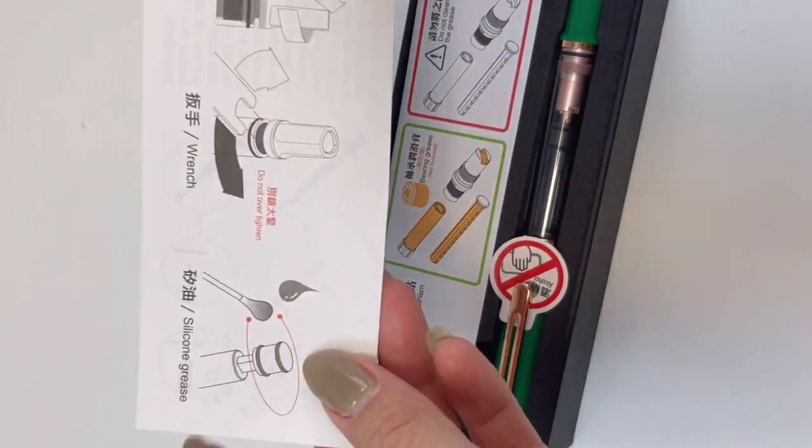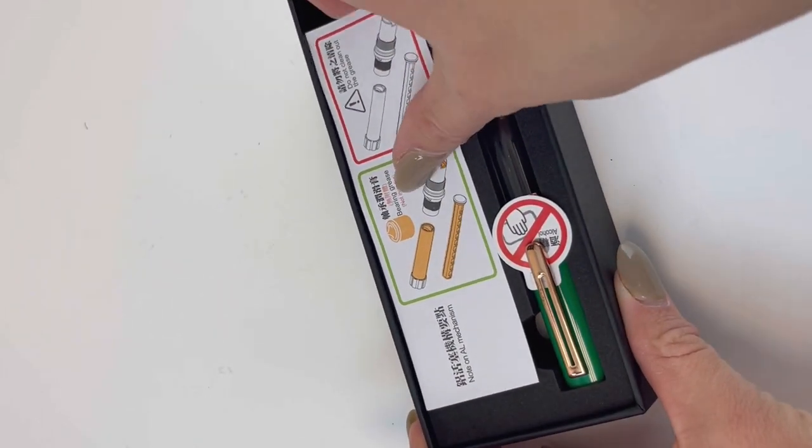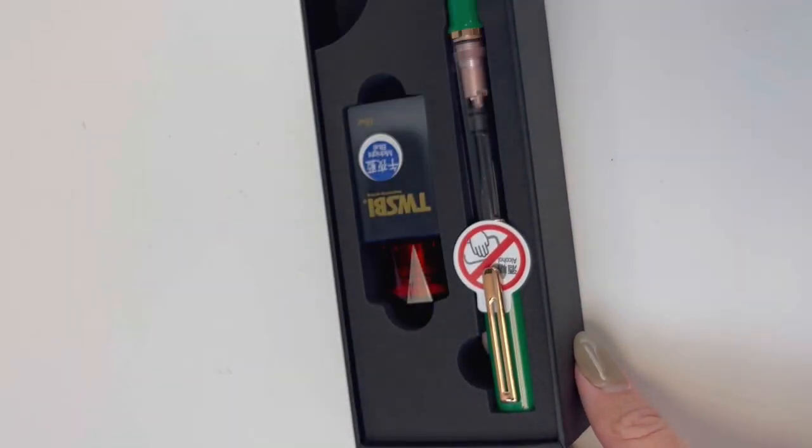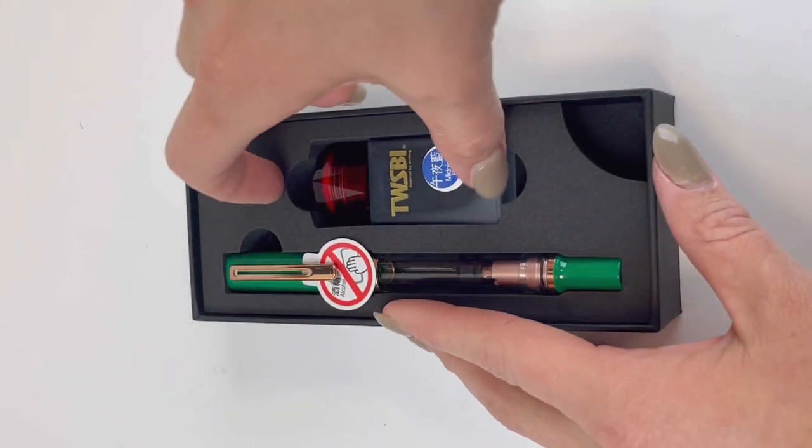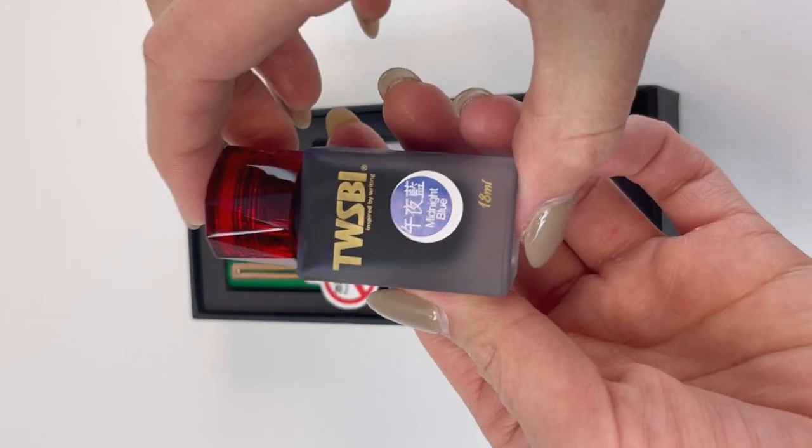It comes in a black box with rose gold design on it, and then the TWSBI logo in silver. In normal TWSBI style, they make sure you have all the information you need: instructions, warnings, everything.